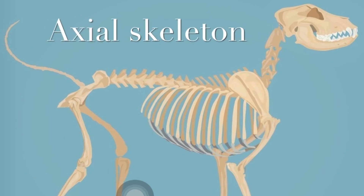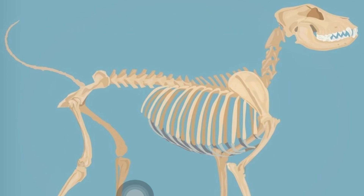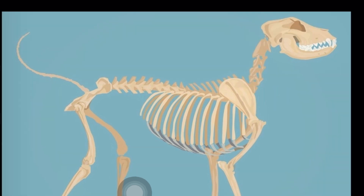For today's video, we will be talking about the axial skeleton. The skeletal system is generally divided into two: the axial skeleton and the appendicular skeleton.